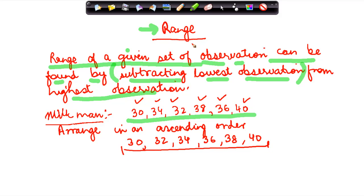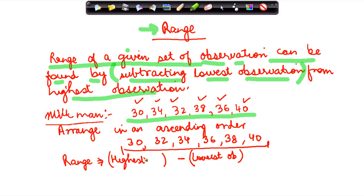Now, what is the range? To get the range, I need to find the lowest observation and subtract it from the highest observation. My highest observation is 40, because this is in ascending order, and the lowest is obviously 30. So the range I get for this particular set of numbers is 10.